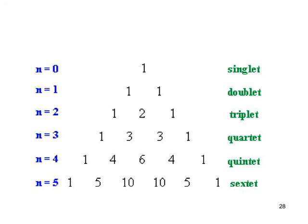We use the n plus 1 rule to work out how many peaks a particular peak will be split into — whether it's a doublet, triplet, quartet, or even more. In a doublet the ratio of heights is 1:1, so both peaks are the same height. In a triplet the ratio is 1:2:1. In a quartet it's 1:3:3:1.